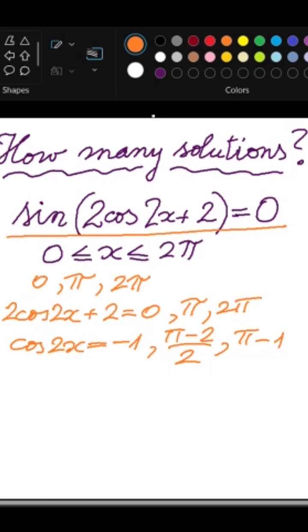And for analyzing how many solutions we will get, I will draw a quick sketch of function y equals cosine of 2x, which is a horizontal stretch, scale factor 1 over 2.